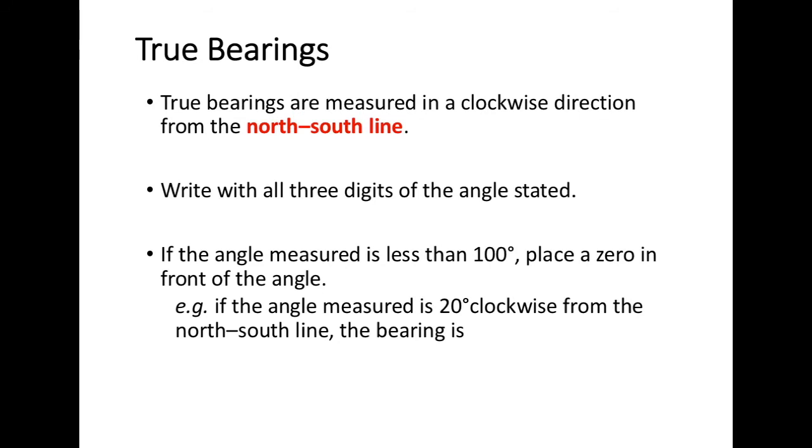True bearings are always measured in the clockwise direction from the north-south line. When writing true bearings, we write them always with all three digits. This is important to remember, especially when we have a measurement under 100 degrees - we still place a zero in front of our angle size to ensure that we have three digits.